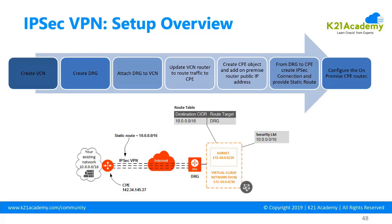Creating the IPSec VPN tunnel is a 7-step process: first, create a VCN in OCI; second, create a DRG; third, attach the DRG to the VCN; fourth, update your on-premise router to route traffic to the CPE; fifth, create a CPE object in OCI; sixth, create an IPSec connection from the DRG; and seventh, provide the static route so traffic from OCI can reach on-premise. This full process is covered in detail in the advanced networking module of the cloud certification training.